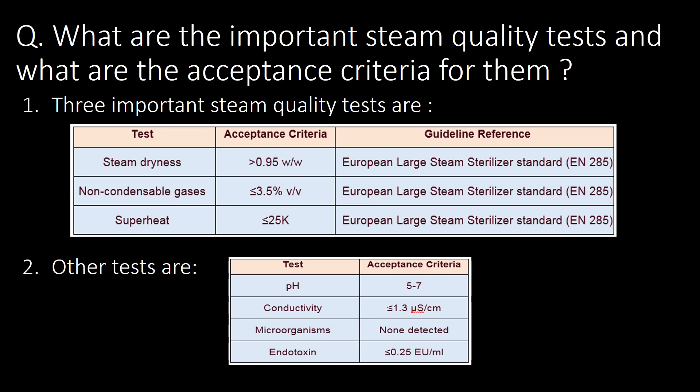What are the important steam quality tests and what are the acceptance criteria for them? Steam dryness, non-condensable gases, and superheat are the three important steam quality tests. You can refer to the table below for acceptance criteria as per the European large steam sterilizer standard, EN 285. Other important tests are pH conductivity, microorganism content, and endotoxin.